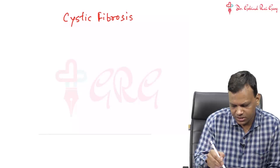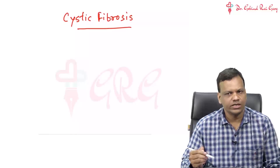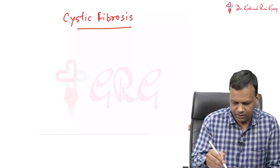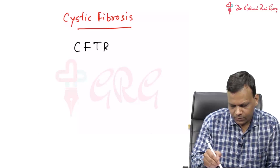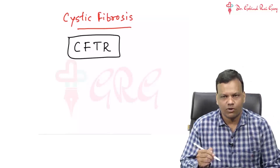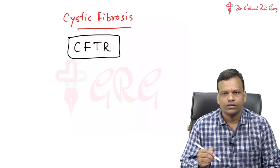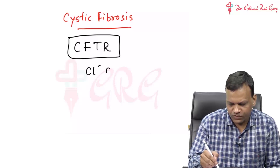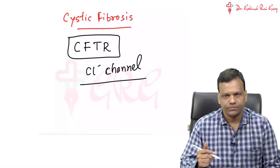In cystic fibrosis, there is accumulation of secretions in various parts of the body, particularly the respiratory system. The reason is there is a defective protein called the cystic fibrosis transmembrane regulator protein. This protein, or rather this gene, basically codes for a chloride channel, which helps in secretion of chloride and other ions in various parts of the body.